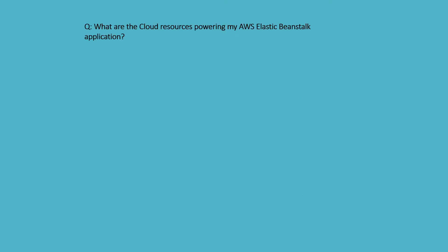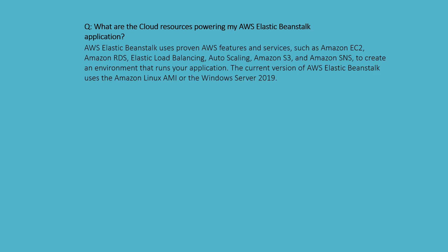What cloud resources power my AWS Elastic Beanstalk application? AWS Elastic Beanstalk uses proven AWS features and services such as Amazon EC2, Amazon RDS, Elastic Load Balancer, Auto Scaling, Amazon S3, and Amazon SNS to create environments that run your application. The current version uses the Amazon Linux AMI and Windows Server 2019.